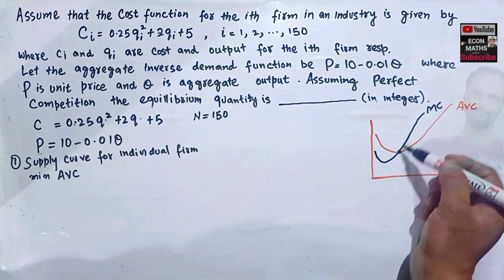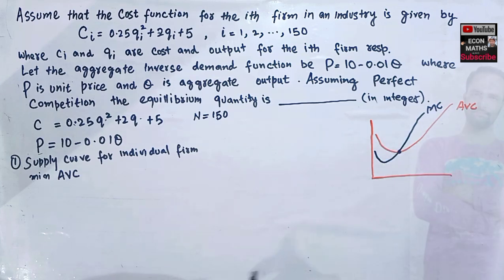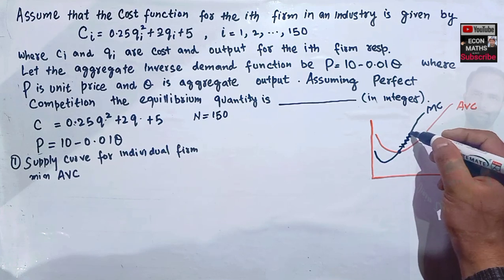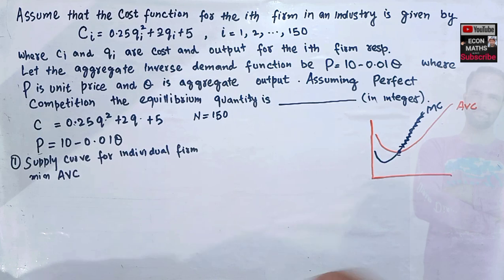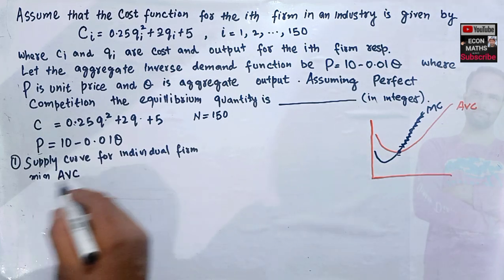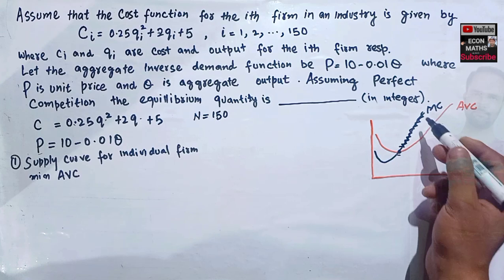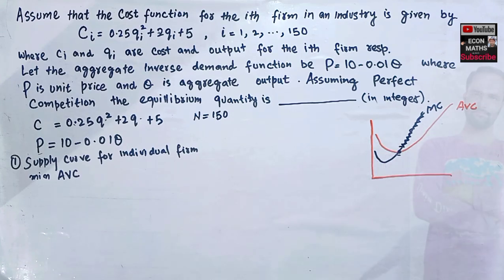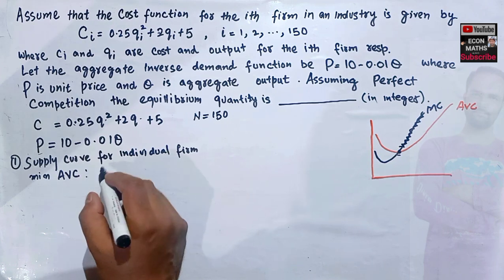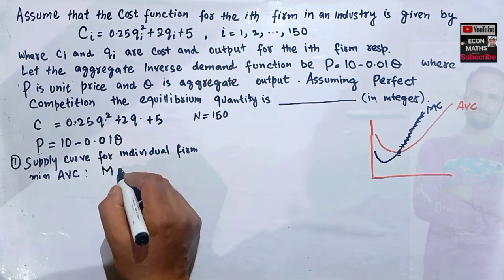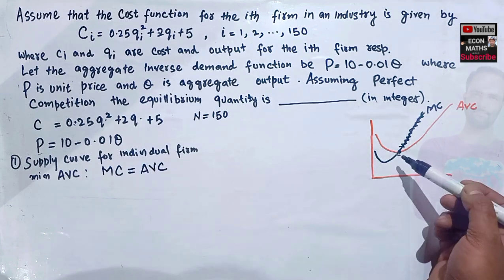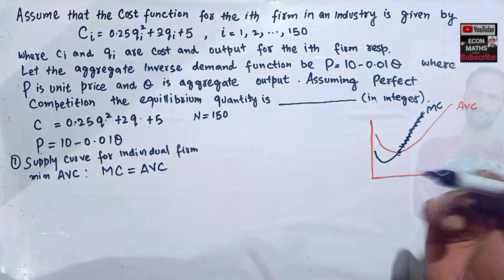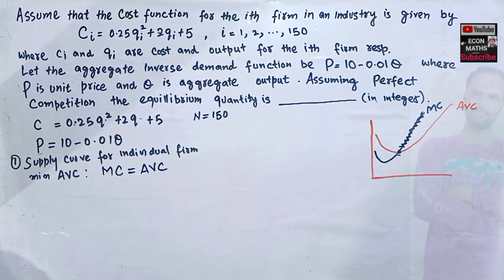This minimum point occurs where marginal cost and average variable cost are equal. The portion of the MC curve above the AVC is our supply function. So we need to find the condition where MC = AVC, and the marginal cost above the AVC is the individual firm's supply curve.